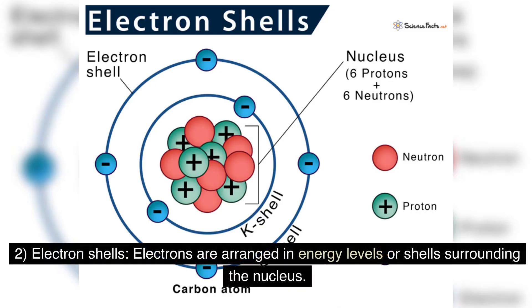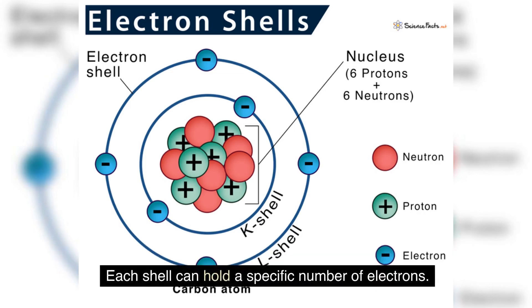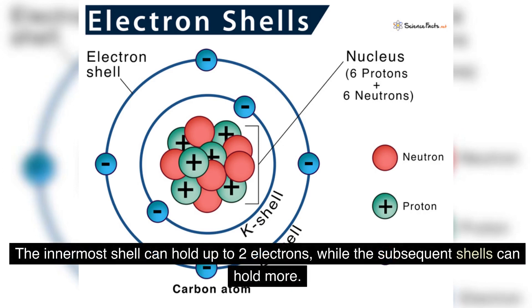Electron shells: electrons are arranged in energy levels or shells surrounding the nucleus. Each shell can hold a specific number of electrons. The innermost shell can hold up to two electrons, while the subsequent shells can hold more.